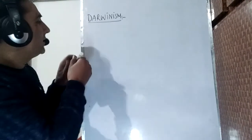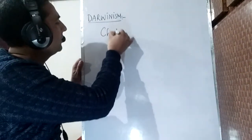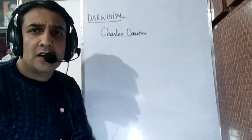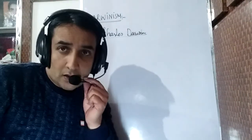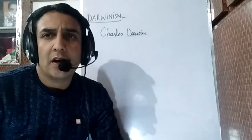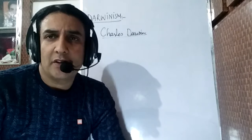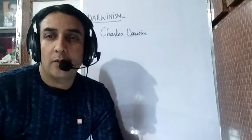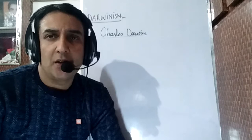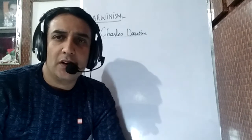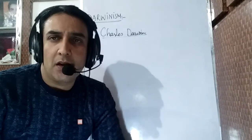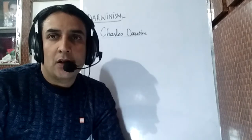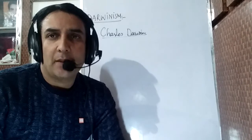This theory was put forth by Charles Darwin and is commonly known as Darwinism. We shall discuss the background of all the ideas which Darwin accumulated from different sources, and from his research he put forth these ideas in the form of a theory called the theory of natural selection. He published this theory in his book entitled 'On the Origin of Species by Means of Natural Selection.'